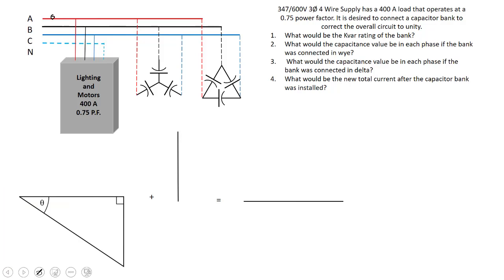By the use of a capacitor bank, the questions are: What would the kVAR rating of the bank need to be to correct this to unity? Questions two and three ask us to calculate the capacitance if the three capacitors are connected in Y or if they're connected in delta. And the last question, we're going to determine the total current of the capacitor bank after installation.